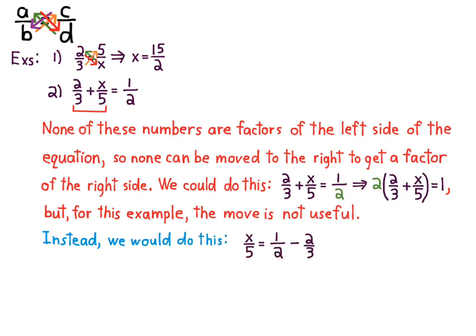So, instead, what I would do is isolate the x term, which is x over 5, by moving the term 2/3 to the other side. Remember, if you move a term, not a factor, but a term to the other side of the equation, it becomes the opposite. So, it's minus 2/3.